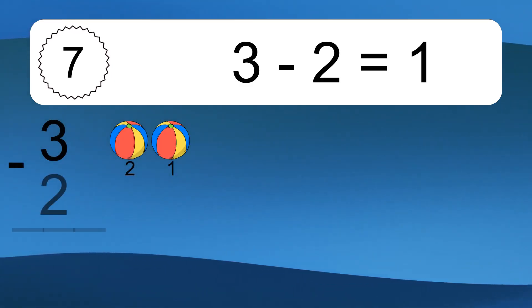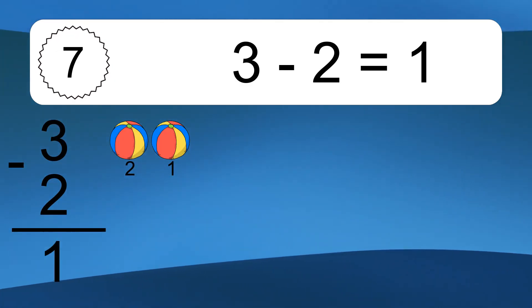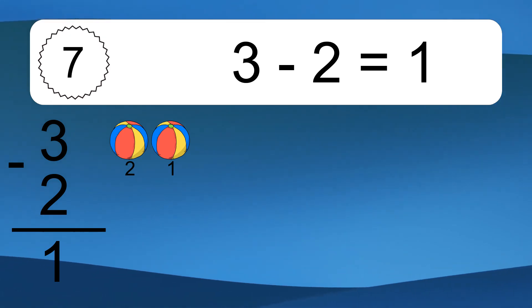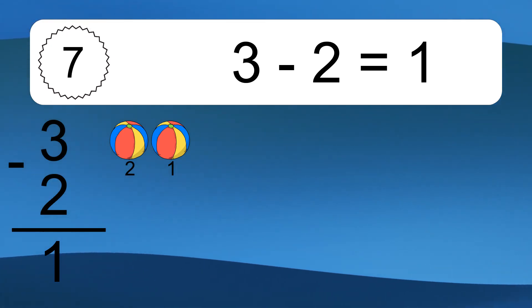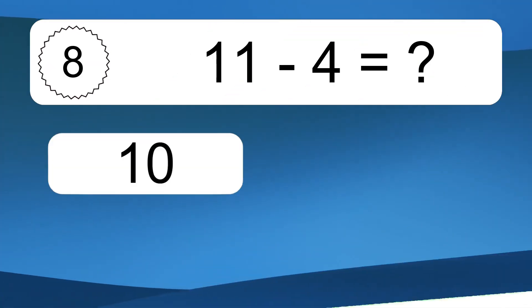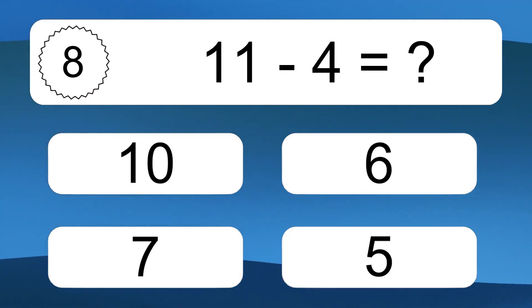3 minus 2 equals what? 3 minus 2 equals 1. Let's count it to 1.